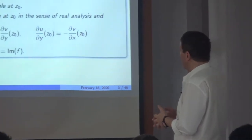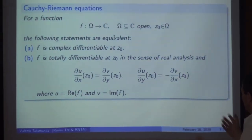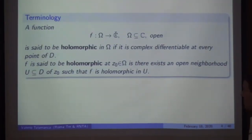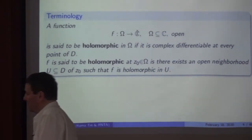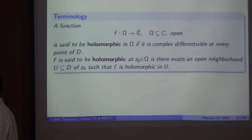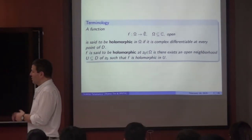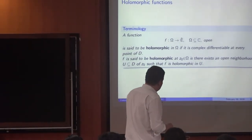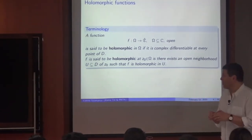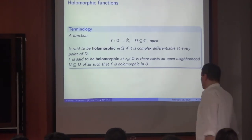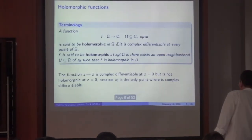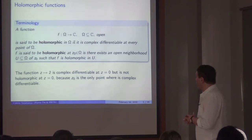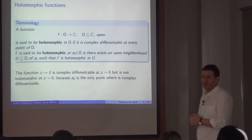When you build up the Jacobian matrix, it can only be a particular type of matrix — it's a much more rigid situation. A function is holomorphic on Ω if it's complex differentiable at every point, and holomorphic at one point if there exists an open neighborhood on which it's holomorphic. It cannot be holomorphic at just one isolated point — for example, z maps to z-bar is complex differentiable only at z equals zero, but it's not holomorphic, because it doesn't satisfy the Cauchy-Riemann equations everywhere else.